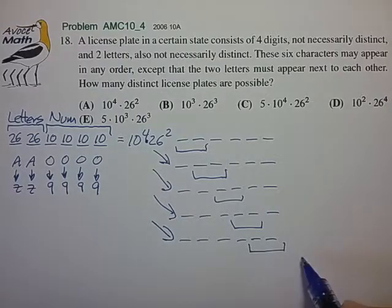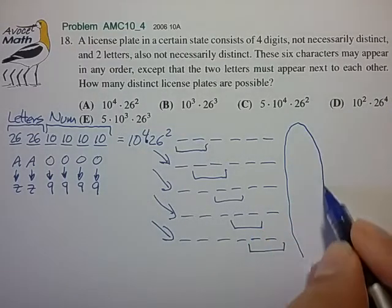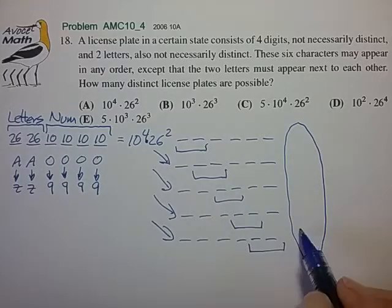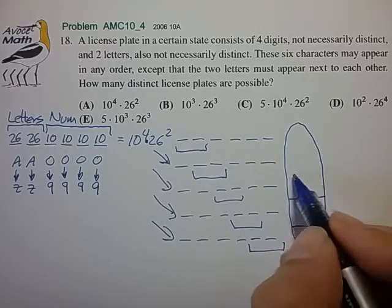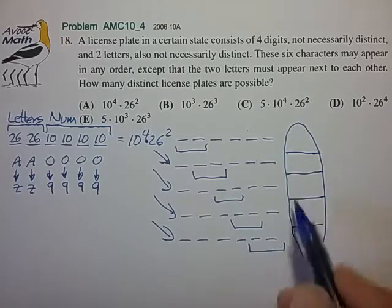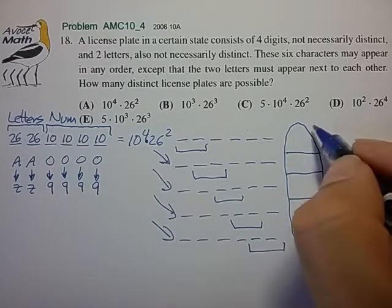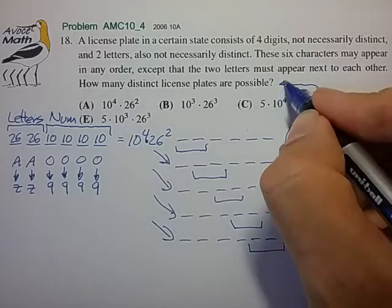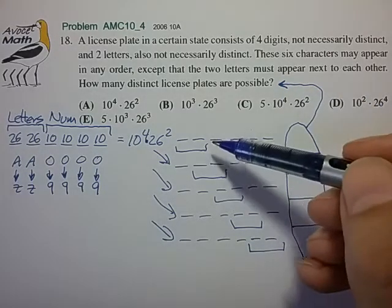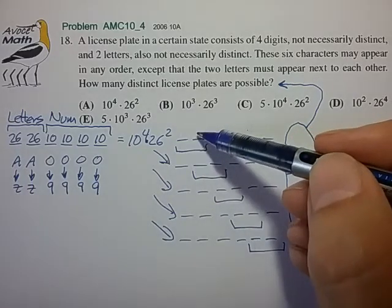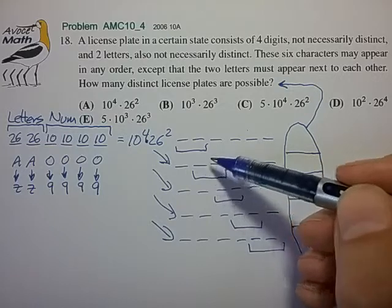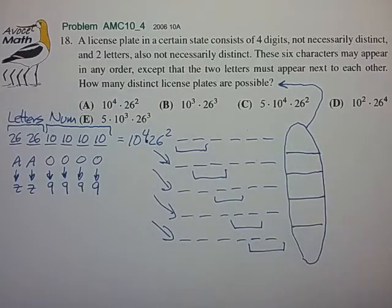What we've done in constructing these five cases is that we've basically constructed five subsets that are non-overlapping and taken together will form all the license plate possibilities that we're interested in. We know they're non-overlapping because a license plate with two letters in the front can never be confused with the license plate with the letters in the second and third position.